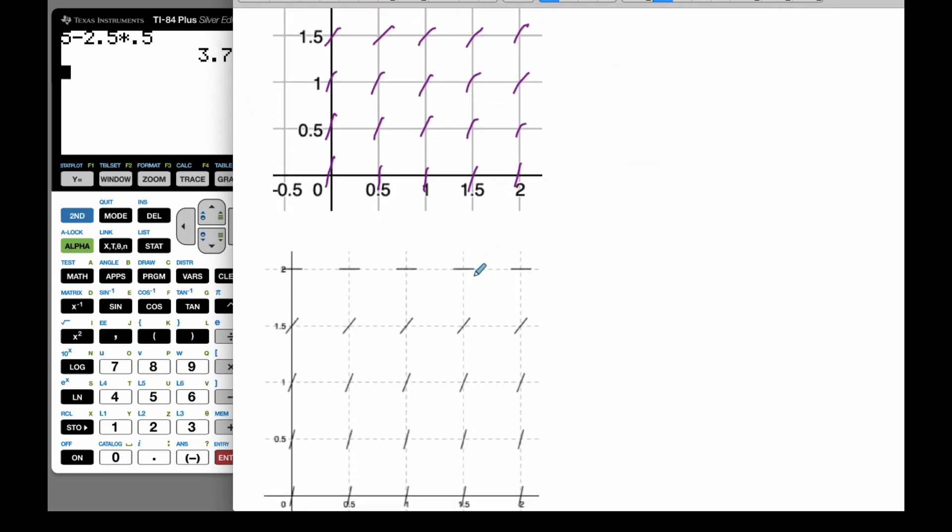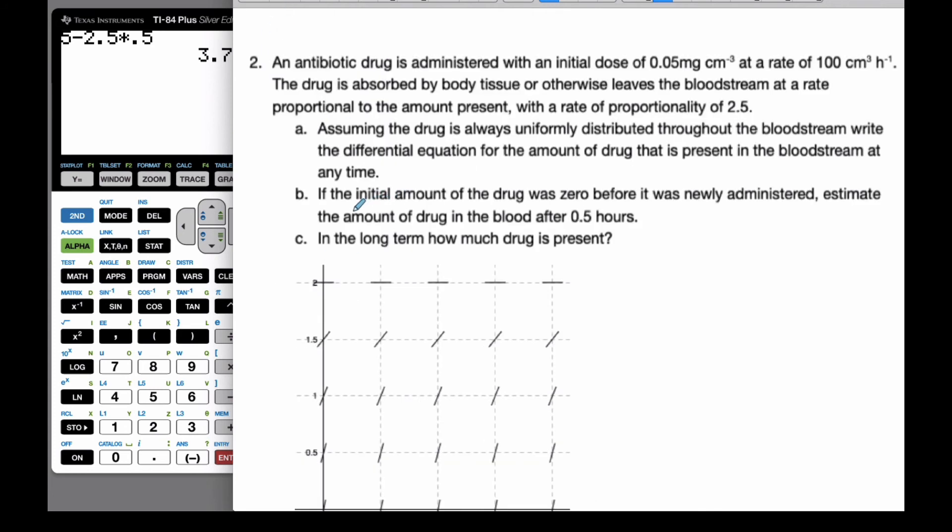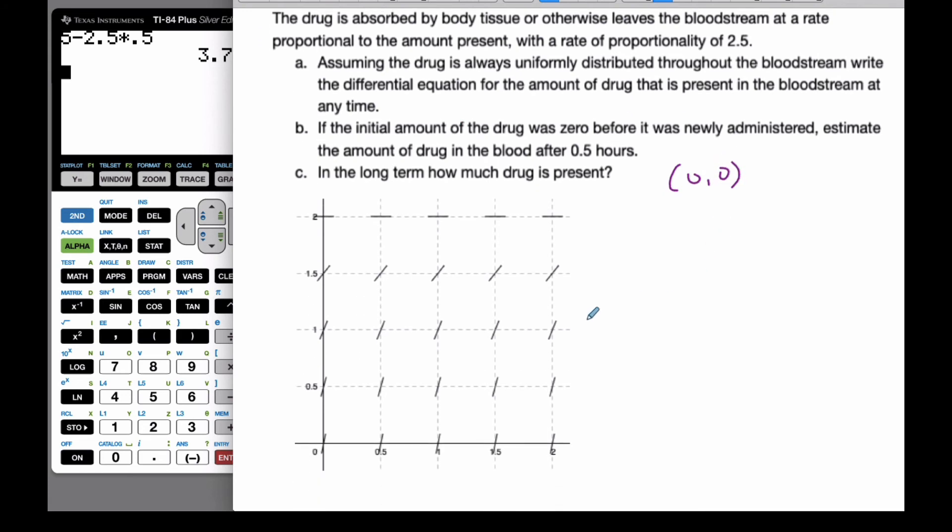And if I do it with technology, this is the nice graph that we get. So let's go back to what we're actually trying to do. If the initial amount of the problem, if my initial point was (0,0), so here's my point (0,0), I want to estimate the amount of drug after 0.5 hours. So from (0,0), I'm going to estimate what the solution curve will look like by using the slope field. So I know it's going around here.